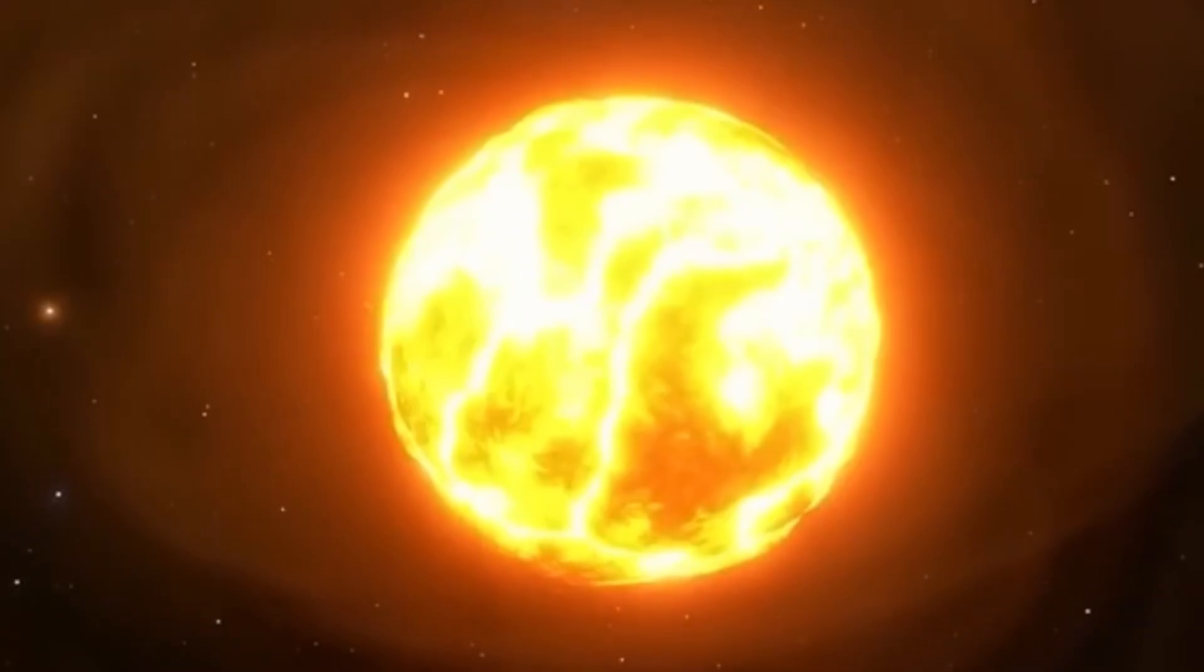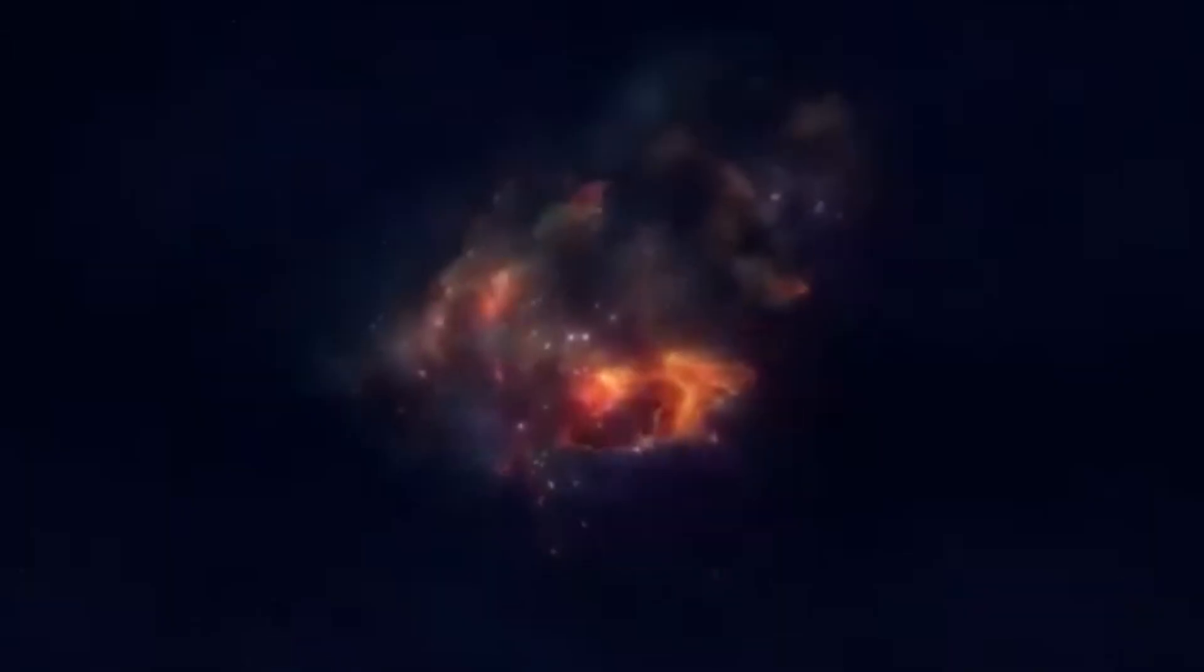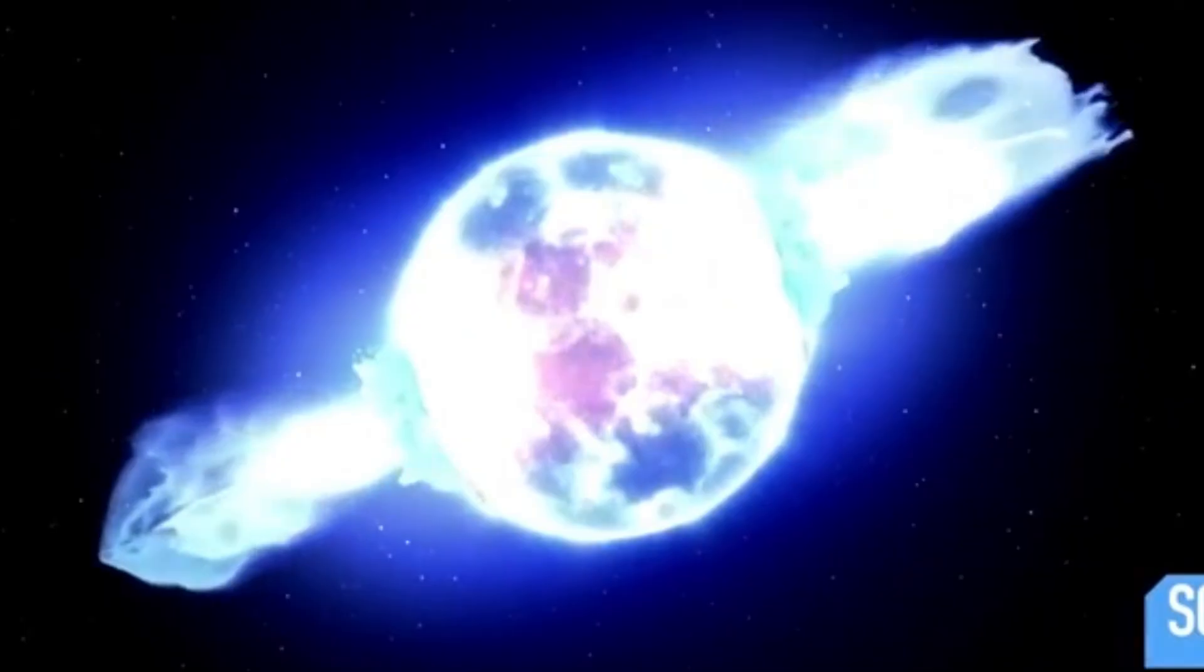To give you an idea of just how powerful a supernova is, imagine taking all the energy that our sun will produce over its entire 10 billion year lifetime and releasing all of that energy in just a few seconds. That's what happens when a massive star like Betelgeuse explodes. The amount of energy released is so enormous that it can outshine an entire galaxy containing hundreds of billions of stars.